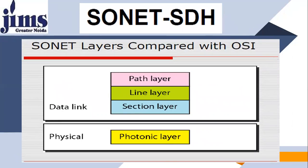SONET layers are compared with the OSI model. As far as layers involved with SONET are concerned, we have the physical layer and the data link layer. In the physical layer, we have the photonic layer. In the data link layer, we start with the section layer, then the line layer, then the path layer.